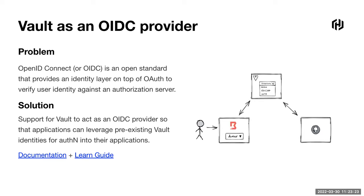Also in this release, the Vault OIDC identity provider piece was rolled out to GA with Vault 1.10. OpenID is an open standard that provides an identity layer on top of OAuth to verify users against an authorization server. The workflow we interact with all day is: you need access to some system, a window appears saying it'll authenticate you against an external identity provider, you verify yourself, and get redirected into your application. Vault can now act as that identity provider.